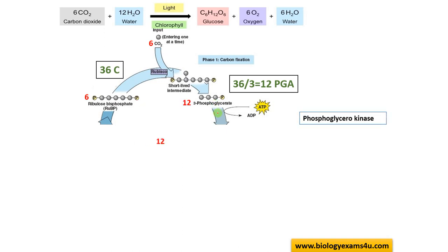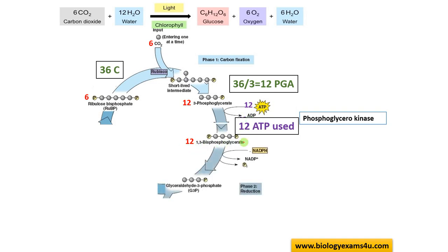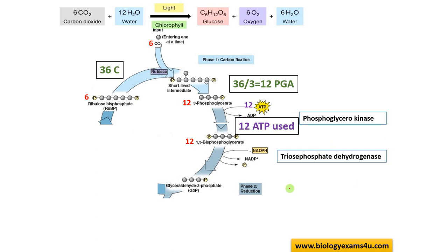3-phosphoglycerate is phosphorylated to form 1,3-bisphosphoglycerate — a phosphate group is added, the enzyme is kinase, and 12 ATP is used. This ATP is synthesized during the light reaction. Then 1,3-bisphosphoglycerate is converted to glyceraldehyde-3-phosphate. This is the reduction phase, where NADPH is used and becomes NADP+. The enzyme is dehydrogenase.